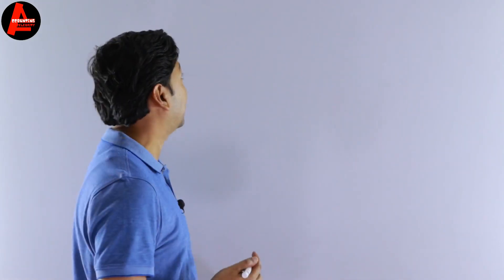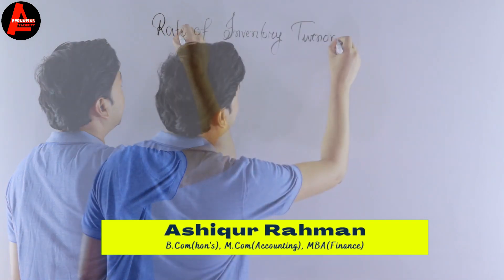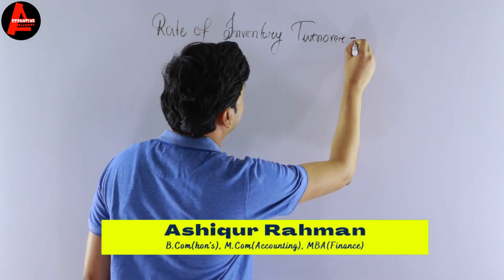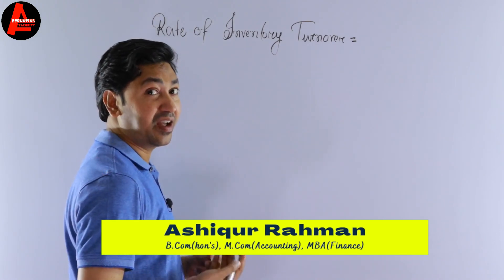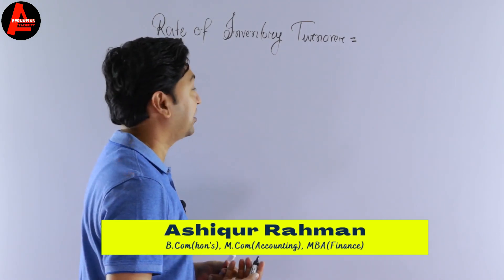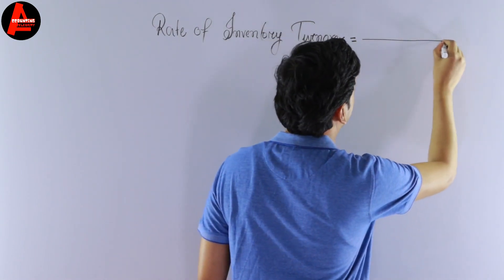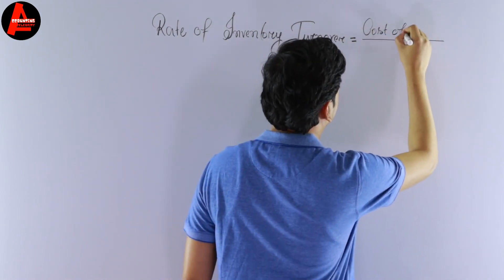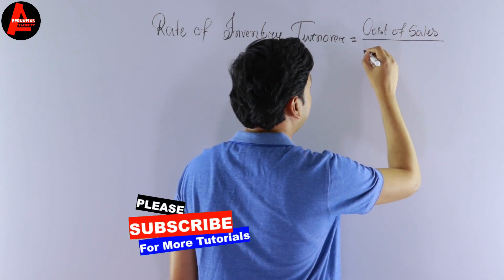So what is the formula to calculate the rate of inventory turnover? We know: rate of inventory turnover equals cost of sales divided by average inventory.